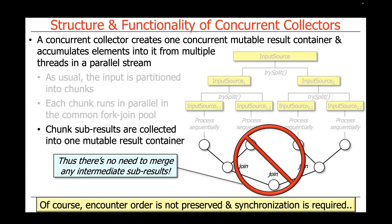One thing to note is that encounter order is not preserved, because we're writing directly into this container, which is typically a ConcurrentHashMap or concurrent hash set. The collection — most notably — is required to provide synchronization, because multiple threads will be adding elements into this one shared instance at the same time.